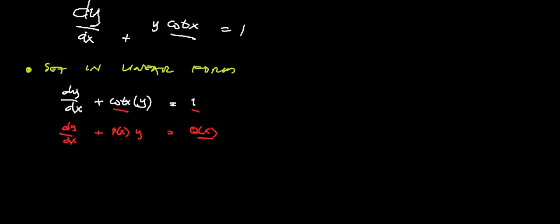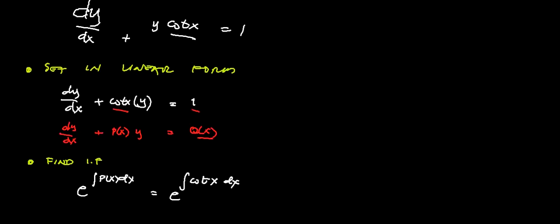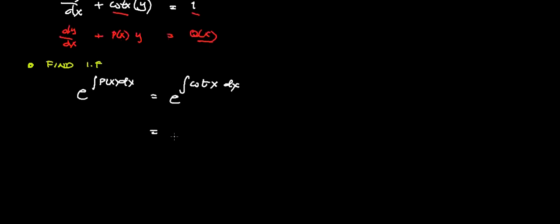The next step is to find the integrating factor. Our integrating factor is equal to e raised to the integral of P(x)dx. Our P(x) here is cot(x)dx. The integral of cot(x) is ln of sin(x), and e raised to ln is just sin(x). So this is now our integrating factor.